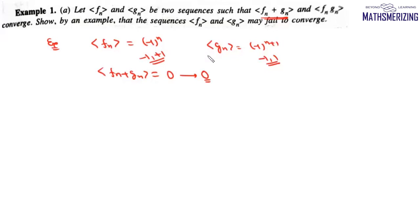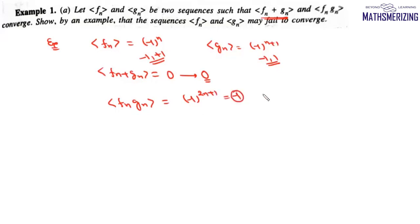Considering the same example, fₙ · gₙ = (-1)ⁿ · (-1)ⁿ⁺¹ = (-1)²ⁿ⁺¹ = -1, which is a constant sequence converging to -1. So fₙ · gₙ converges, yet both fₙ and gₙ individually fail to converge. This serves as a concrete example demonstrating the required result.